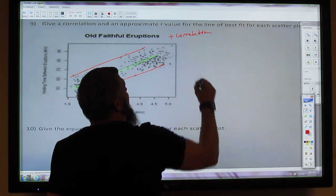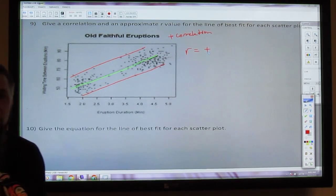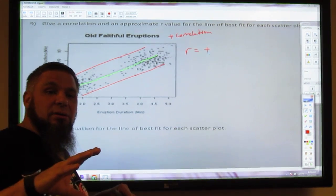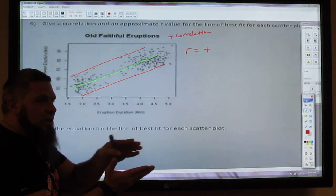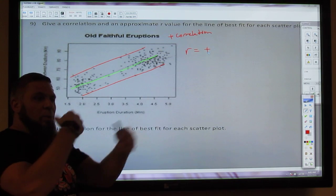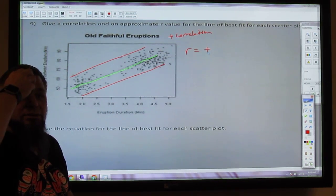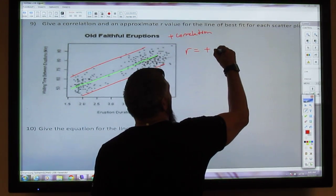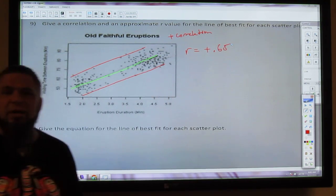So that means the R value is going to be positive, and we know it's going to be above 0.5 because it's very linear. But it's not tight to the line. So it's going to be between 0.8 and 0.6. I think a 0.6 or 0.7 is very valid here. Let's go to 6.5.